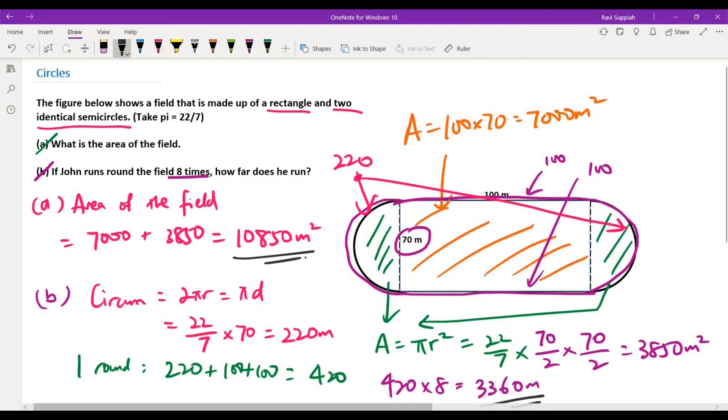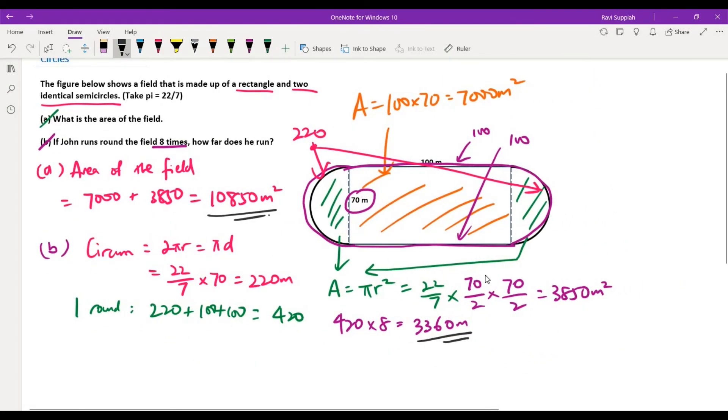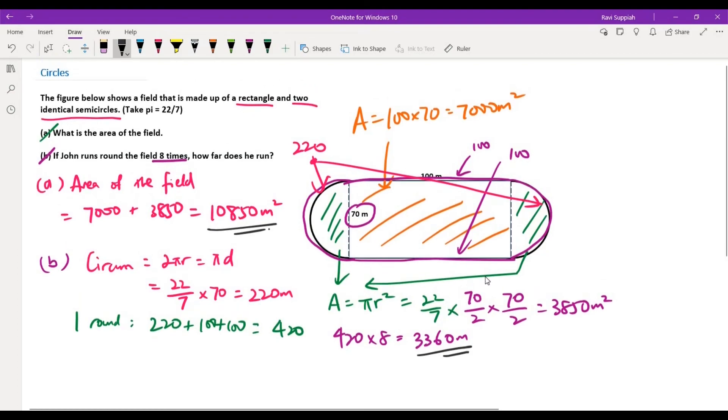So the answer for part B over here would be 3360 meters as the total distance covered by John when he runs around the field eight times. That's the answer for part B. Thank you for watching and I'll see you in my next video. Bye.